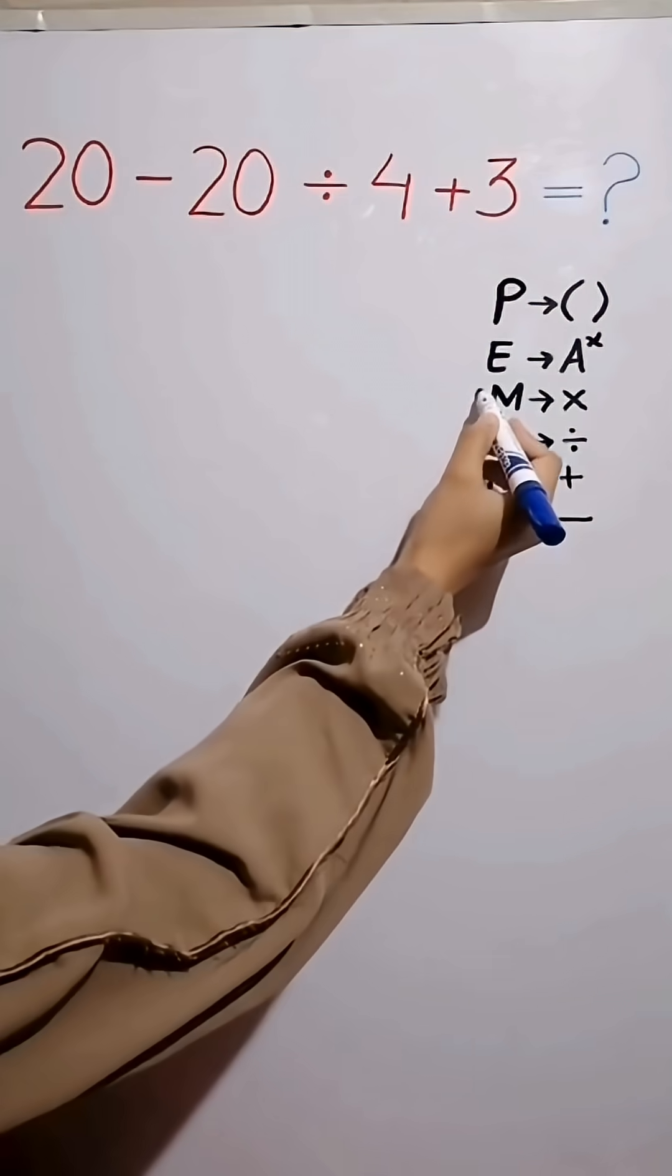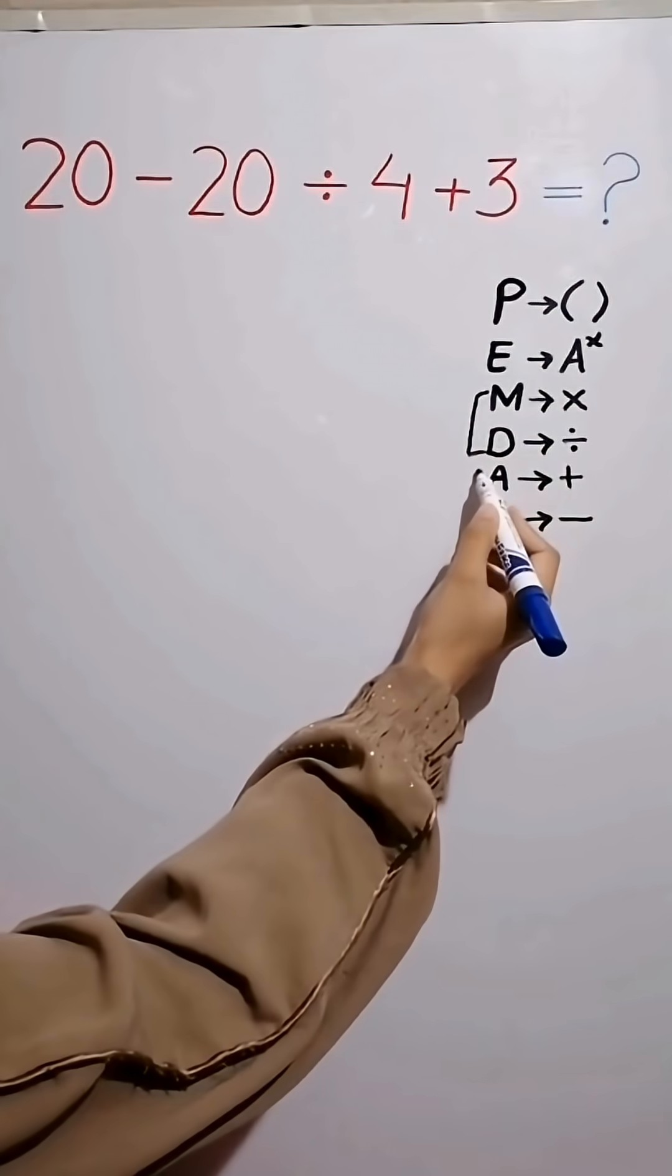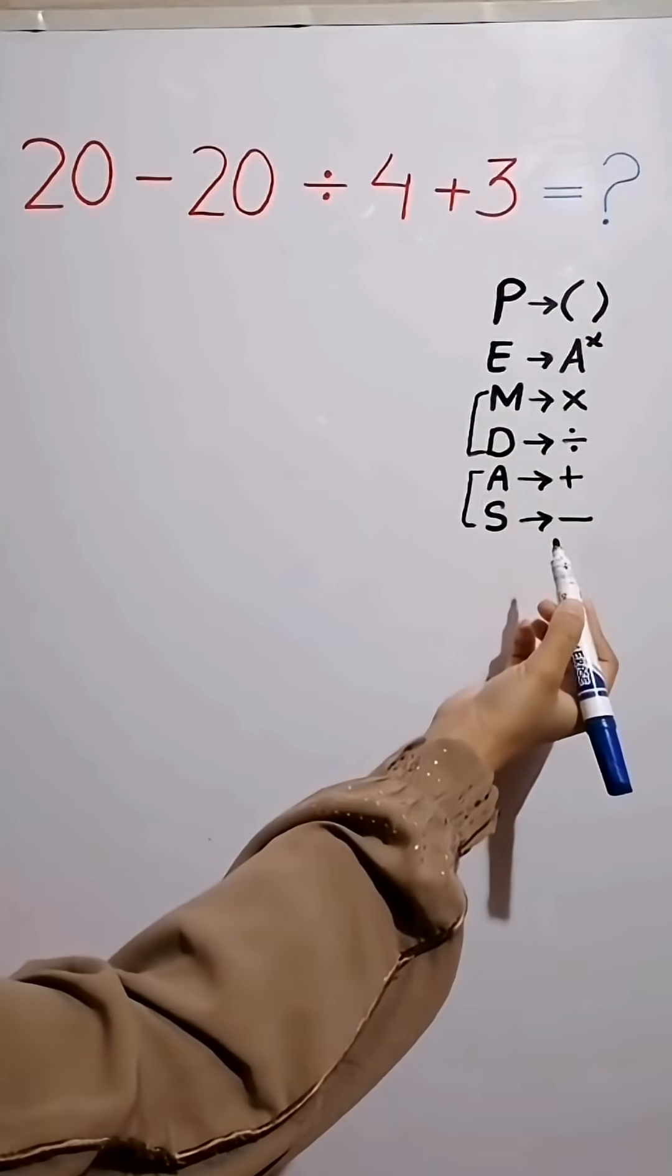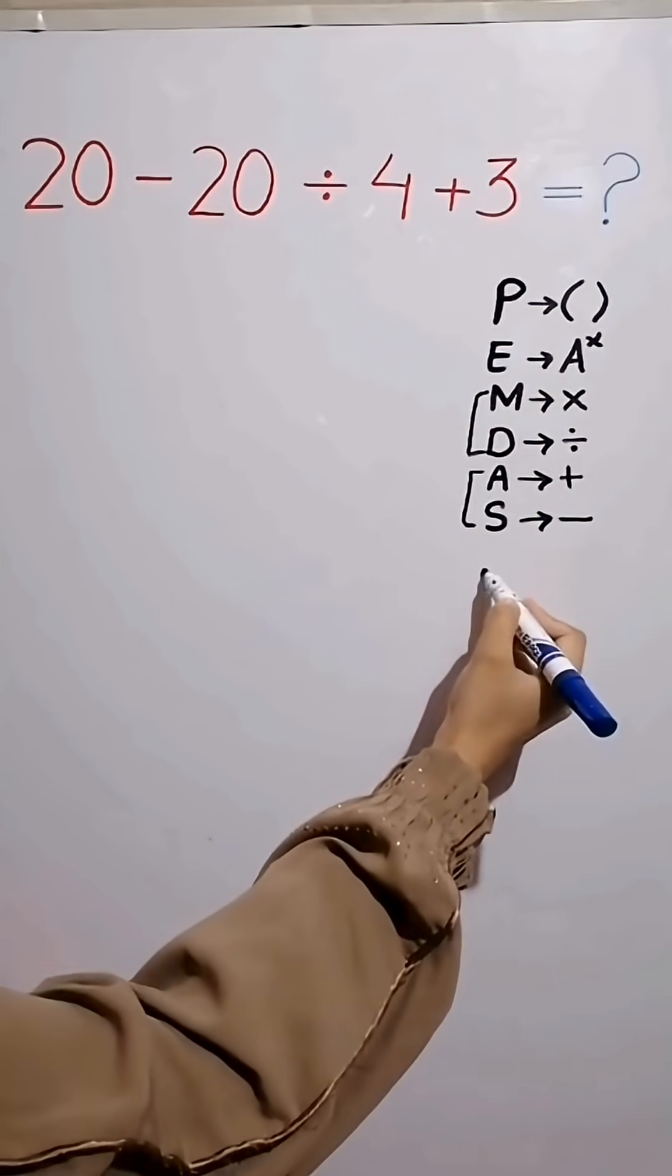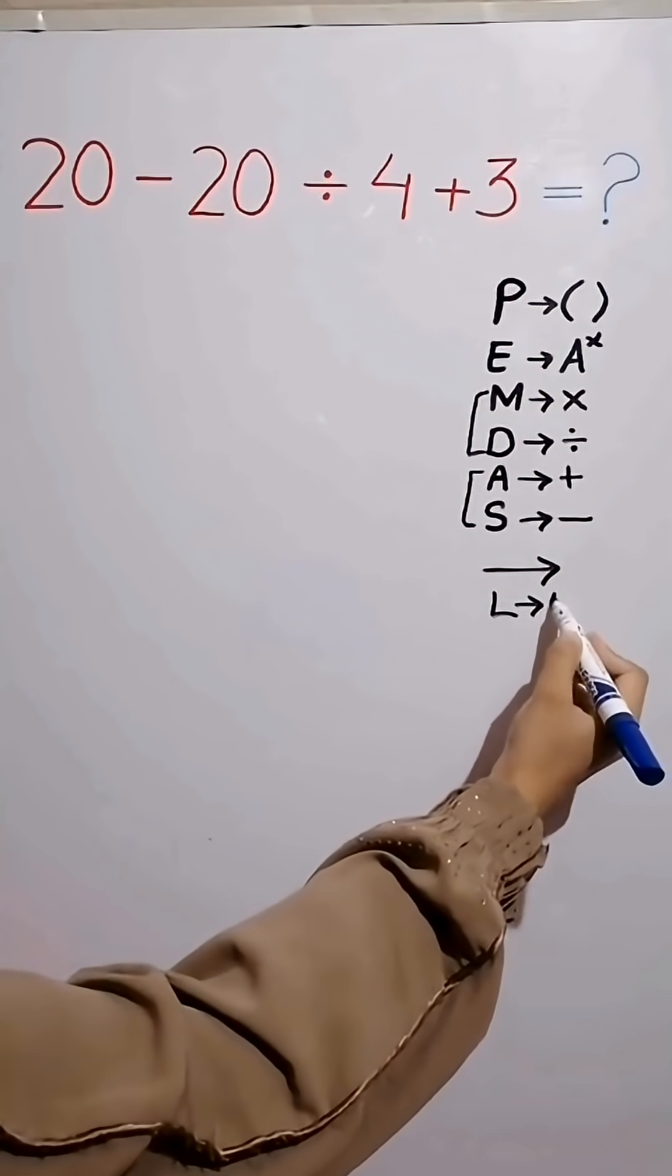Multiplication and division have the same level of priority. Also, addition and subtraction have the same level of priority. When we have both in an expression, we start from the left and simplify the question.